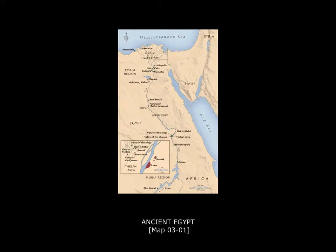Egypt develops along the Nile Valley, as you can see in the map, for the same reasons as culture developed in Mesopotamia — because this is fertile territory. On either side of the Nile is a lot of inhospitable desert-like land, but in a narrow valley along the Nile there is fertile ground to grow crops and establish a civilization. This means Egypt develops along the borders of the Nile and doesn't expand out beyond it very much.